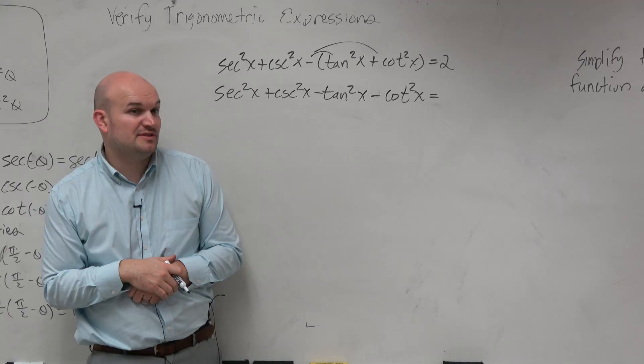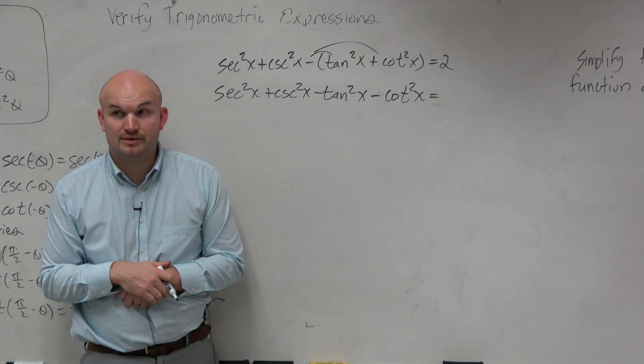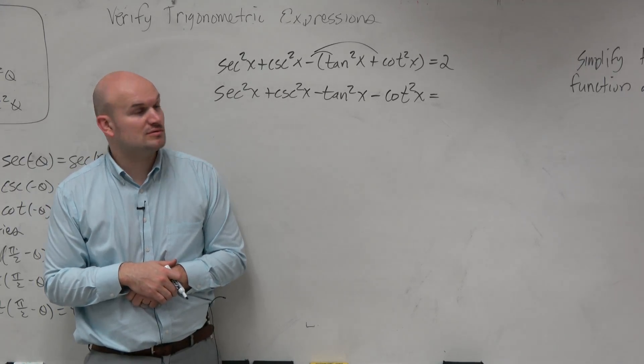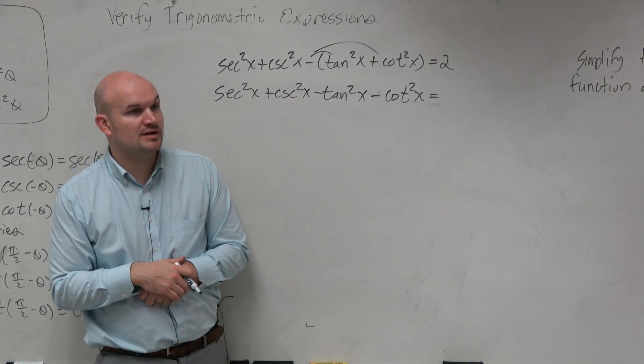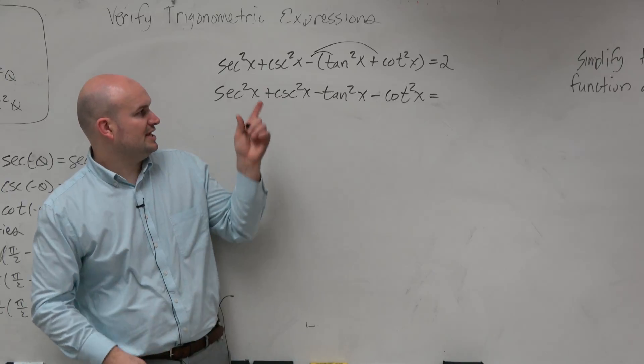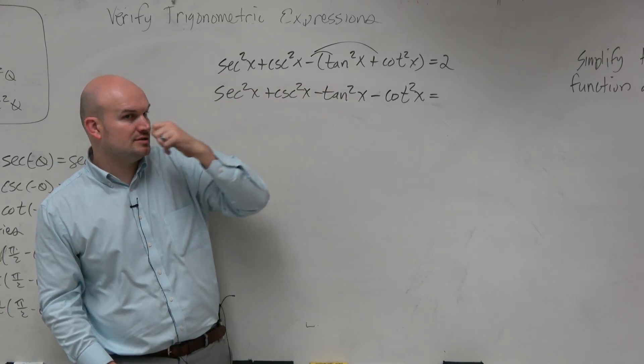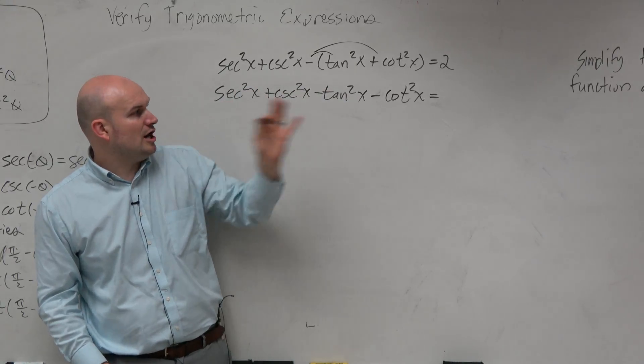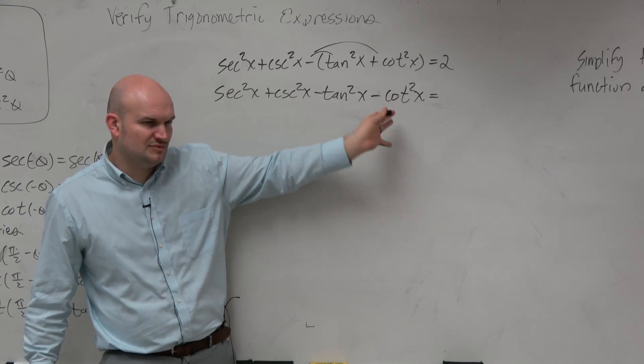Now, the other thing that I notice is I have a lot of terms squared. Sine squared, cosine squared, or secant squared, cosecant squared, right? How would you take that value? You can't distribute square root across addition or subtraction. So that won't help. You can, but I mean, you can just leave it off.